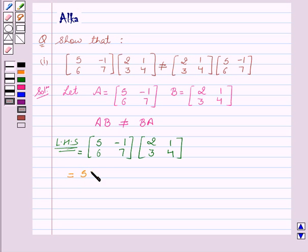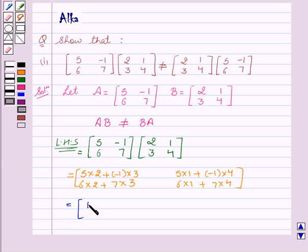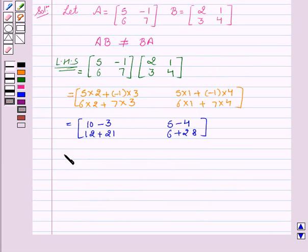LHS equals [5×2 + (-1)×3, 5×1 + (-1)×4; 6×2 + 7×3, 6×1 + 7×4] which equals [10-3, 5-4; 12+21, 6+28]. This is equal to [7, 1; 33, 34].